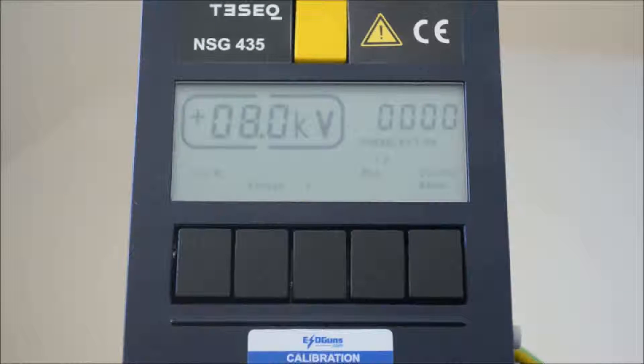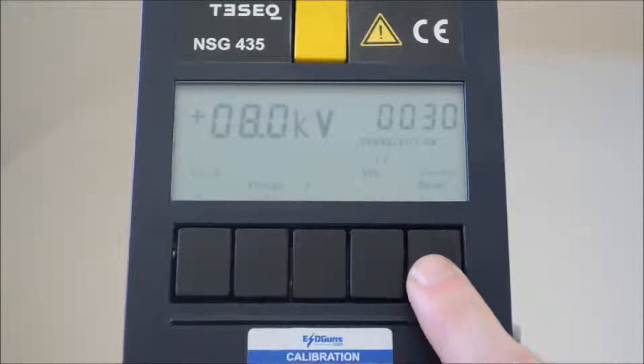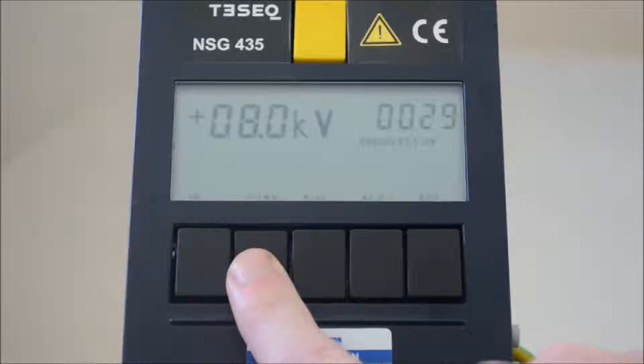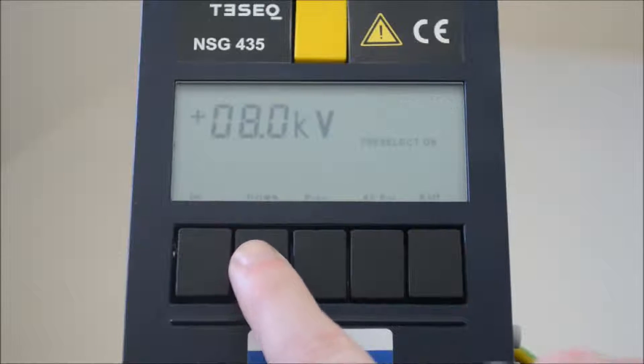Another mode in the preset counter area is continuous operation. F5 to enter the preset counter menu once again. Bring the preset counter down to zero with F2. Press F2 once again to deactivate the counter.